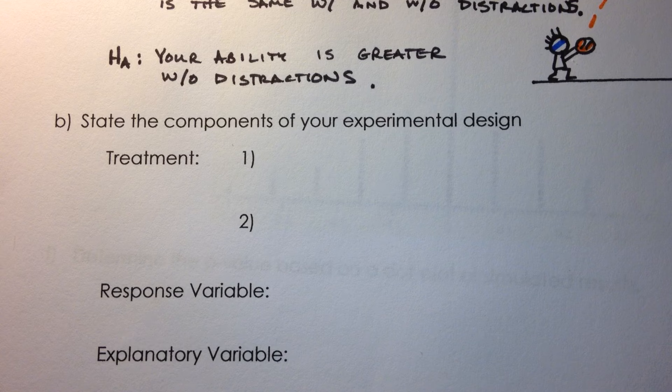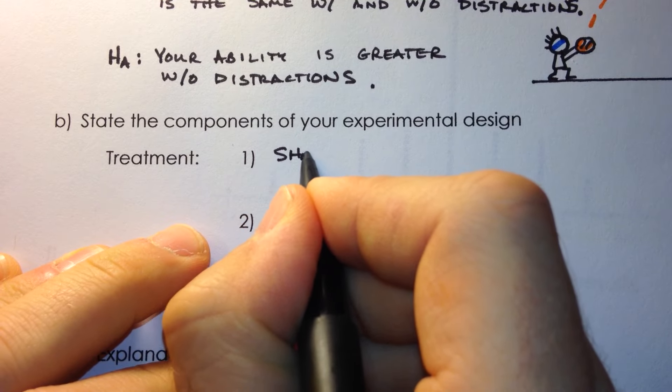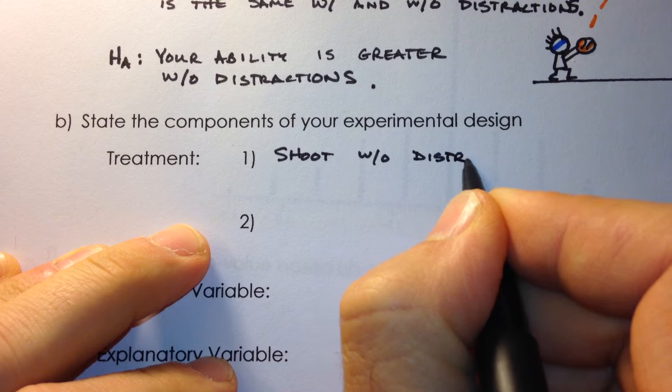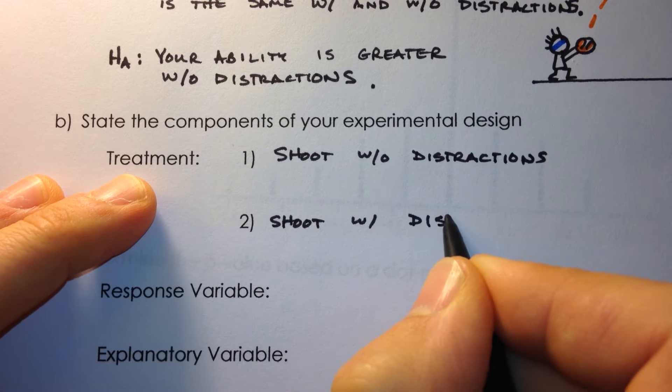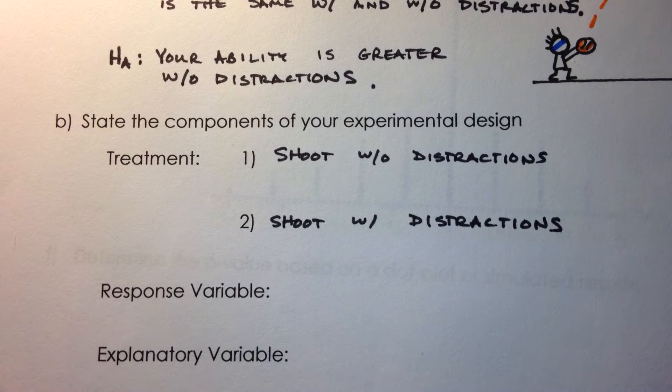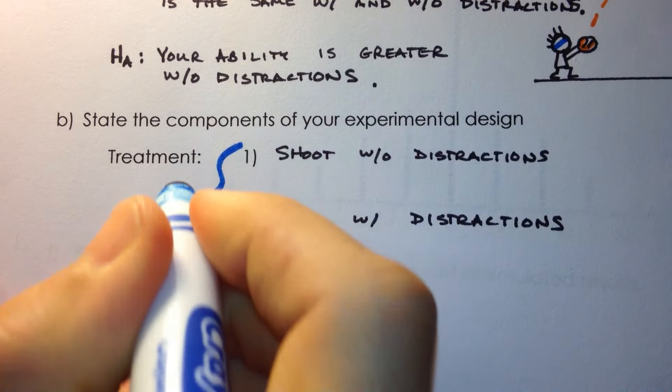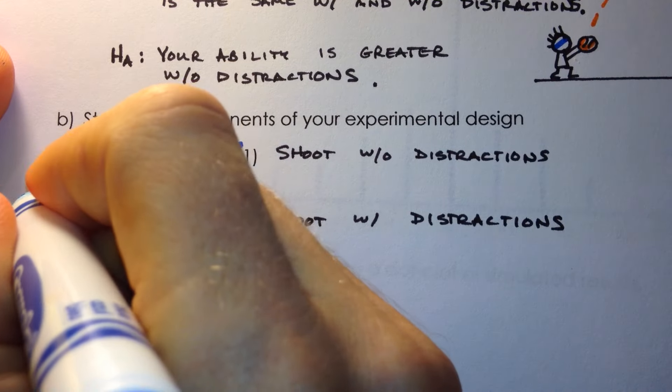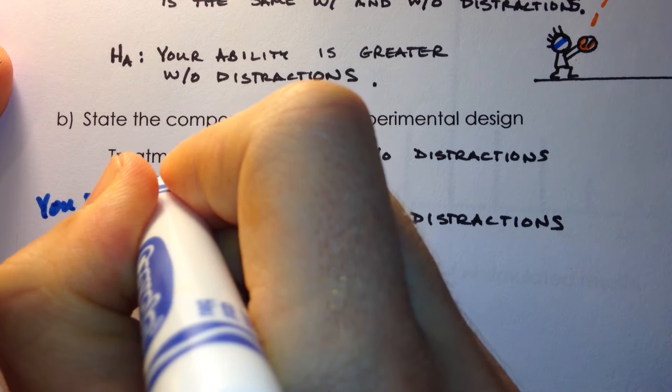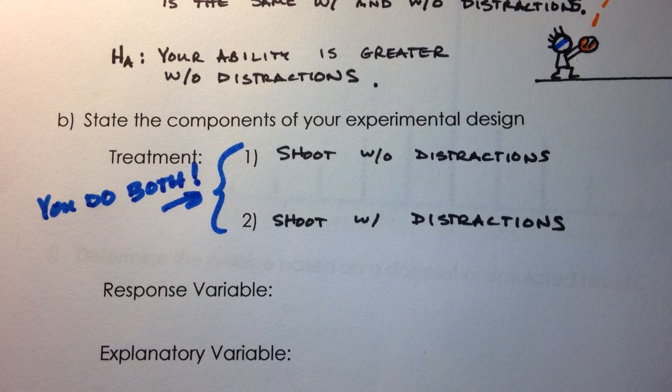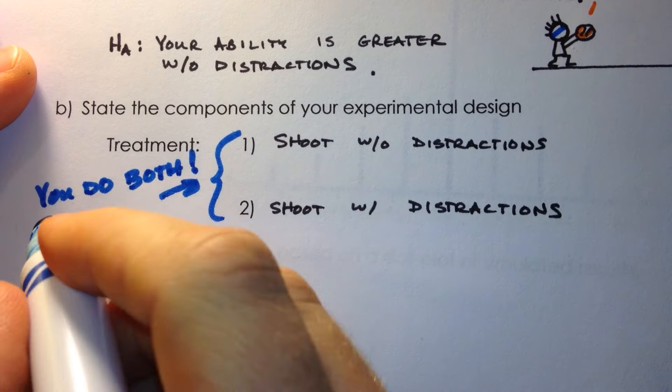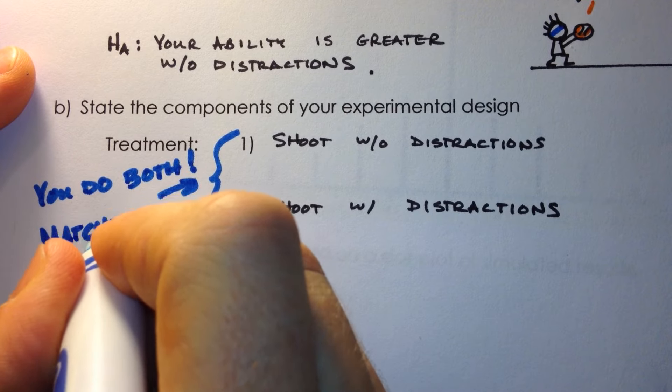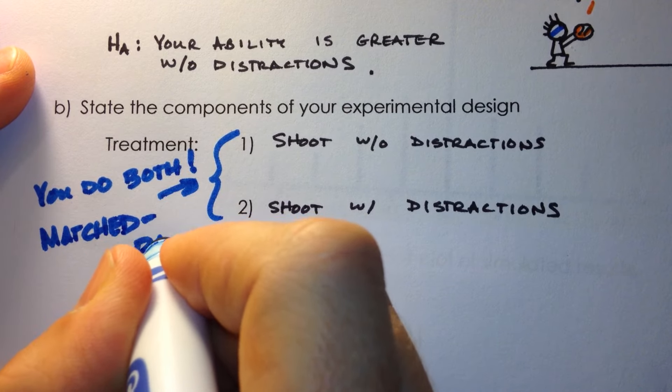So here's how we do this. We take a bunch of shots that you're going to take and we separate them into two treatments. One is to shoot without distractions, and the other is to shoot with distractions. Now in the case of this experiment, because it's you that we want to know whether distractions affect you, you will do both. And that's different than the orange experiment where you either got the orange or you got the not orange. And so since you're doing both, we say that these two treatments are matched. It's called a matched pairs experiment.